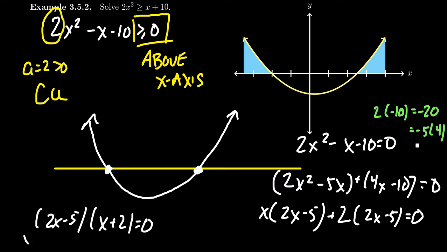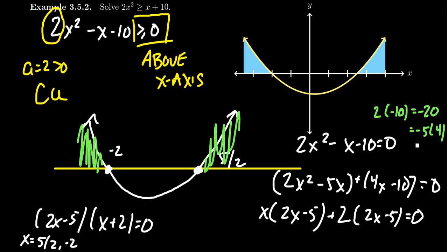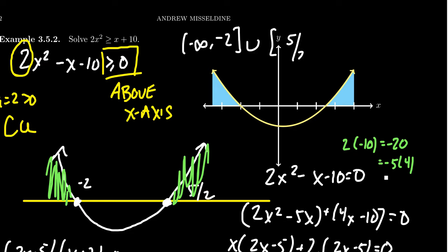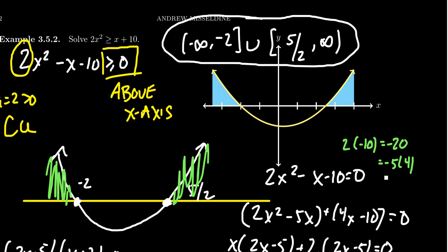That tells us that our solutions are x equals 5 halves and x equals negative 2, which we label on our graph at negative 2 and positive 5 halves, or 2.5 if you prefer. Since we're looking for those things above the x-axis, we grab the portions to the left of negative 2 and to the right of 5 halves. Our solution set is negative infinity up to negative 2, union, 5 halves to infinity. We include the endpoints negative 2 and 5 halves because we are allowed to equal 0.